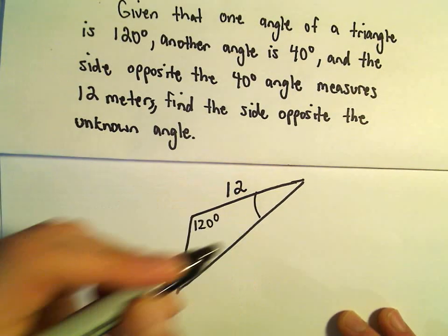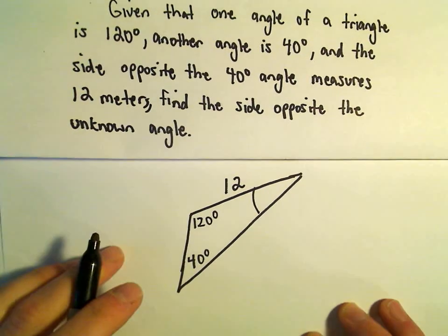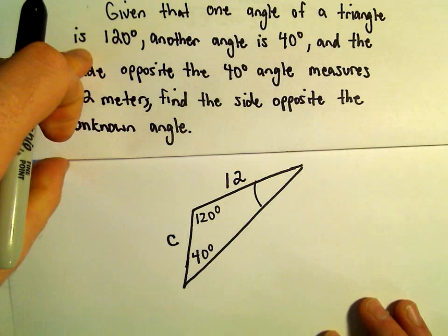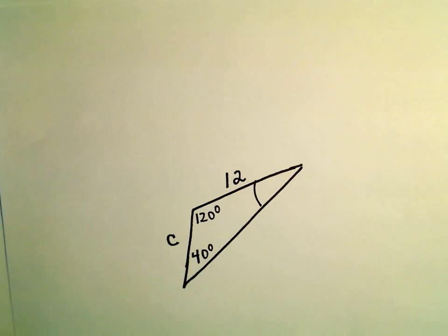This would be our missing angle in our triangle, and we're trying to find the length opposite that. So I'll call that c.